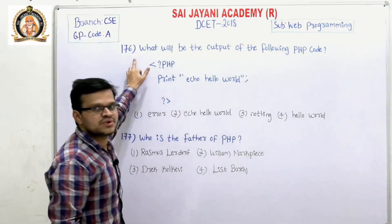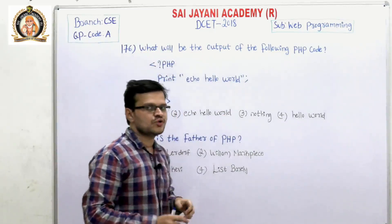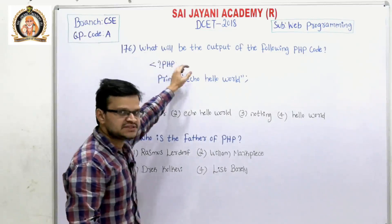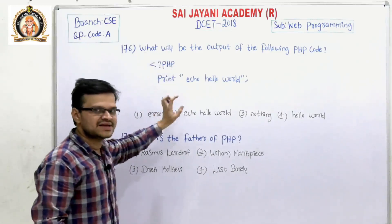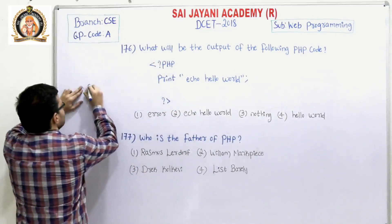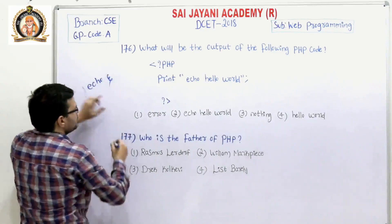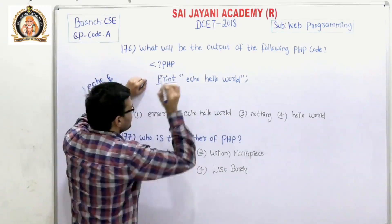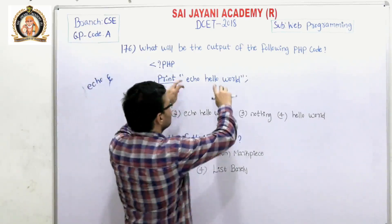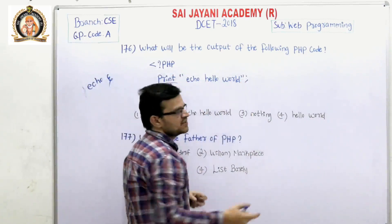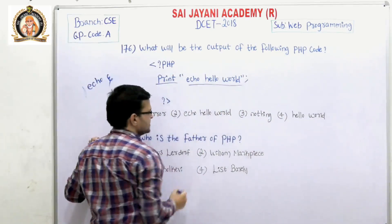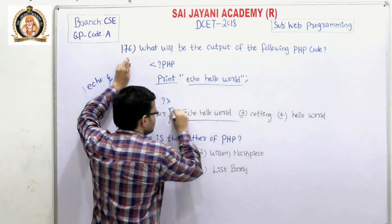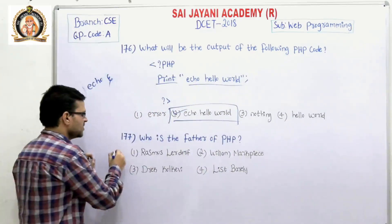Question number 176: What will be the output of the following PHP code? A PHP code starts with '<?php' and ends with '?>'. Echo and print are the two statements used to display data. In this code, a print statement is used, so whatever is written inside the double quotes will be displayed on the screen. The output 'Hello World' is displayed, so for question number 176, the second option — echo Hello World — is the right answer.